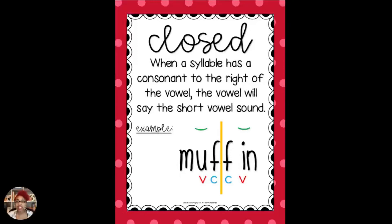So in the example 'muffin,' the U makes the 'uh' sound and the I makes the 'ih' sound. When you put those syllables together, both syllables — 'muff' and 'fin' — are both closed syllables, making their vowels say the short vowel sound.